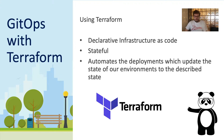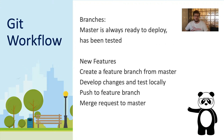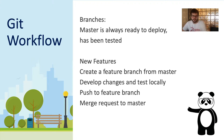To recap: Terraform automates deployments which update environments to described states stored within our Git repo. Now, just a brief intro to Git. Git is a very popular version control tool that allows us to manage source code in what's called a repository. This allows multiple engineers or teams to make changes and test features without affecting what's called the master branch — our tested and ready-to-go code.